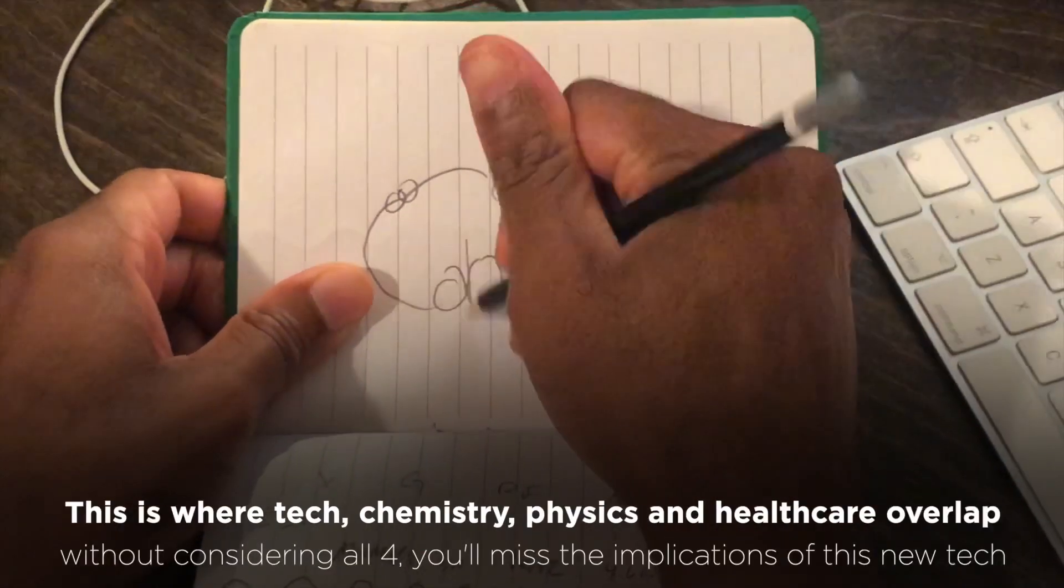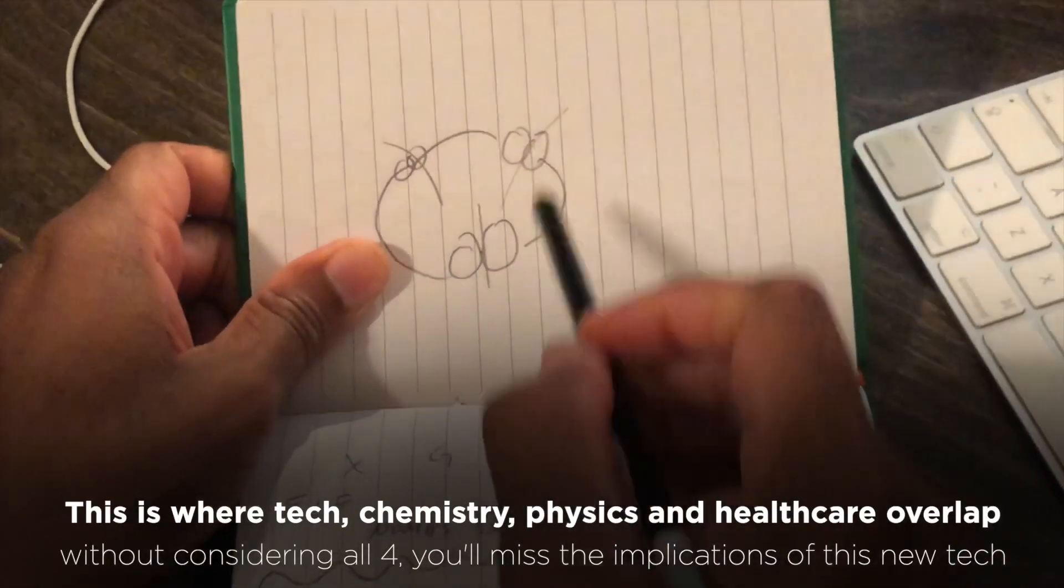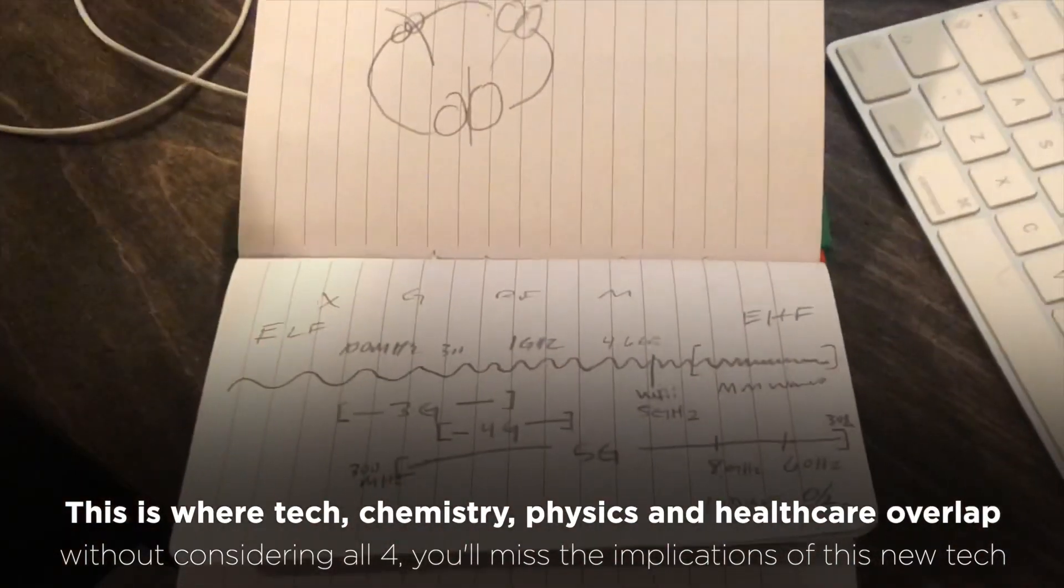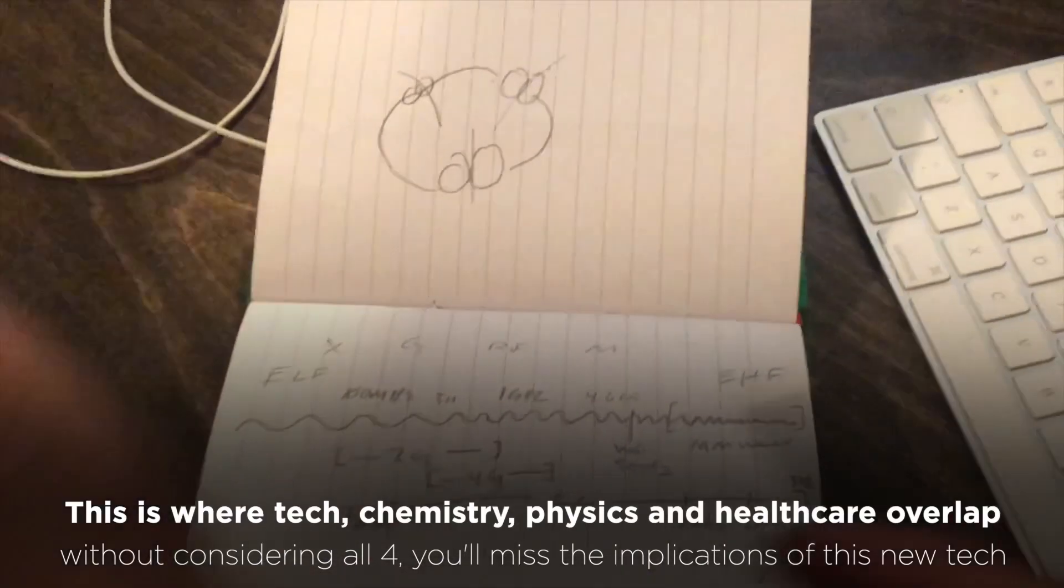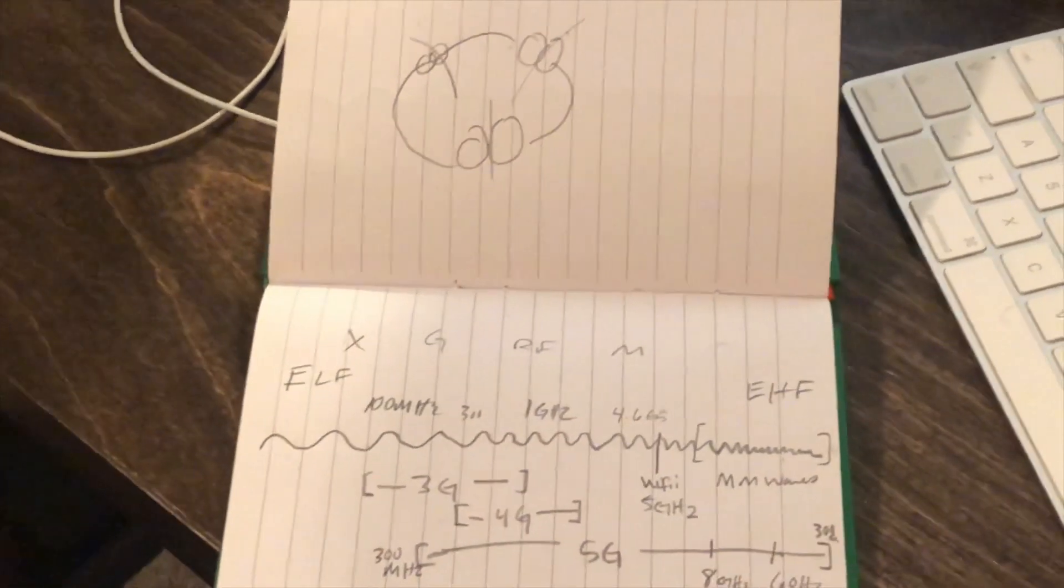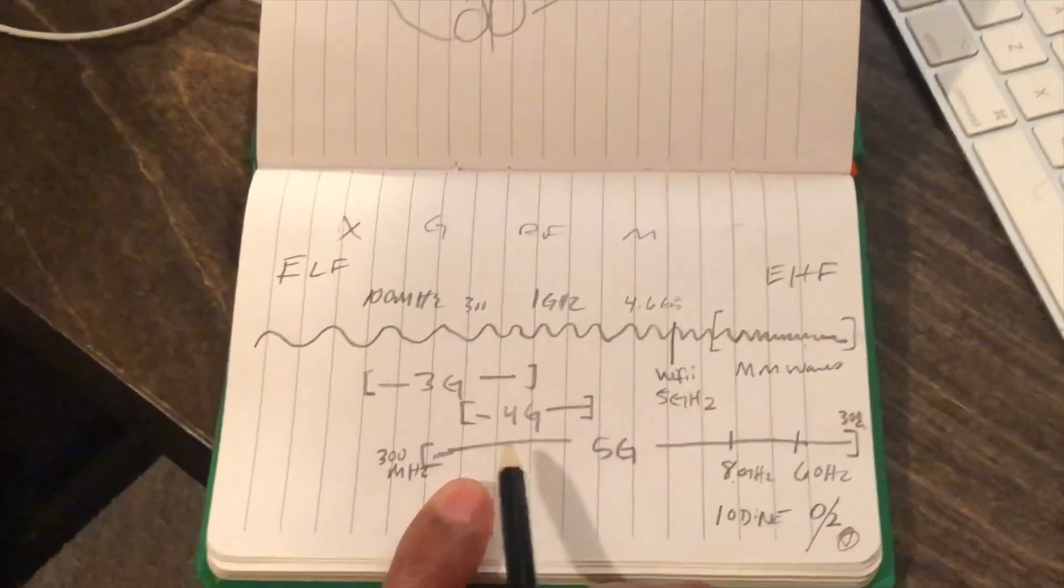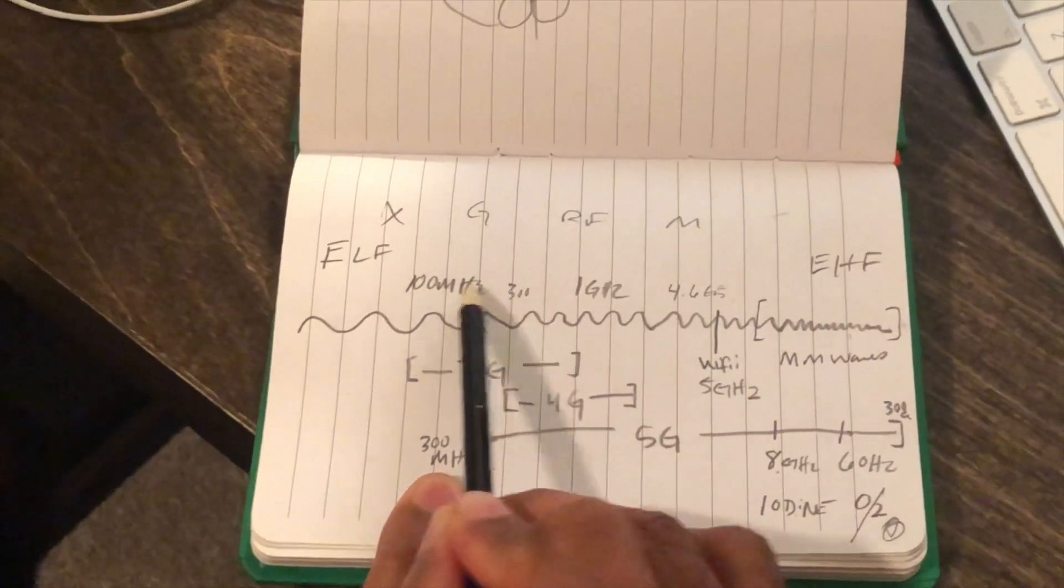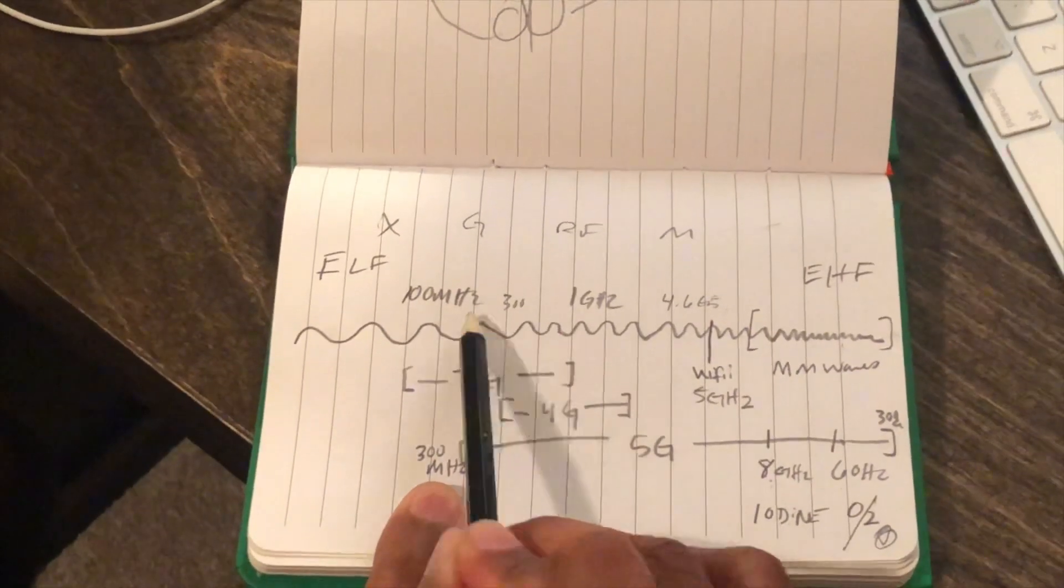It breaks up the electricity that holds the two oxygen molecules together in a bigger ring. Then you have free radical oxygen, which is not breathable, it's not usable by the hemoglobin in your blood. Same with iodine at 8 gigahertz.